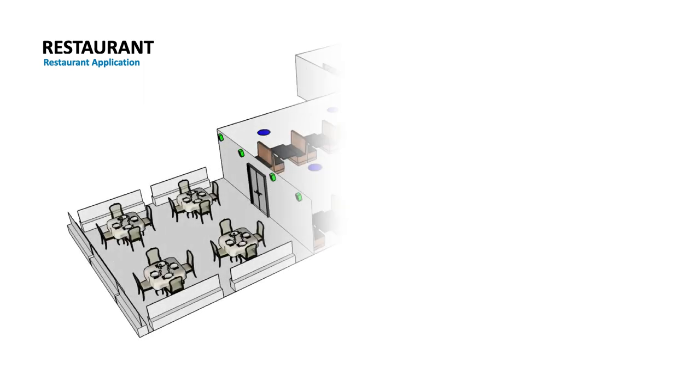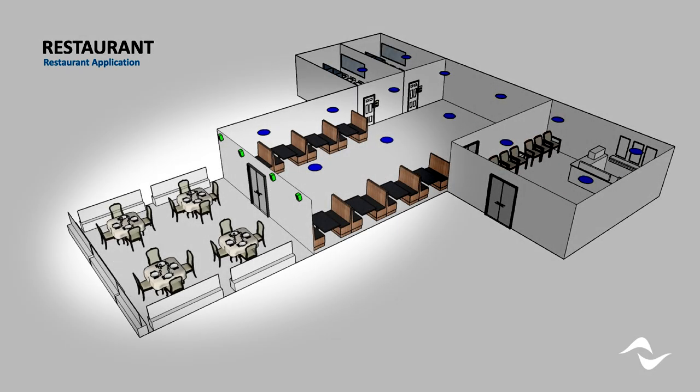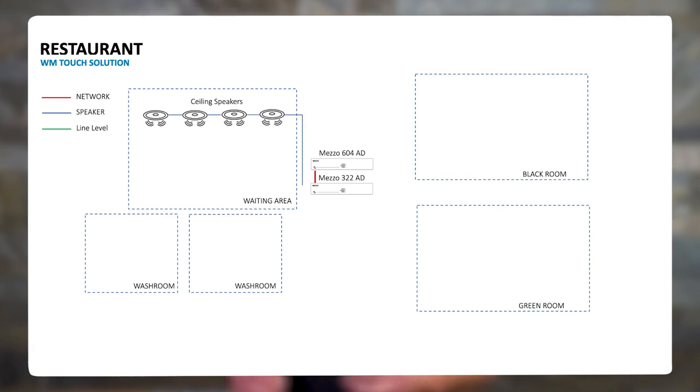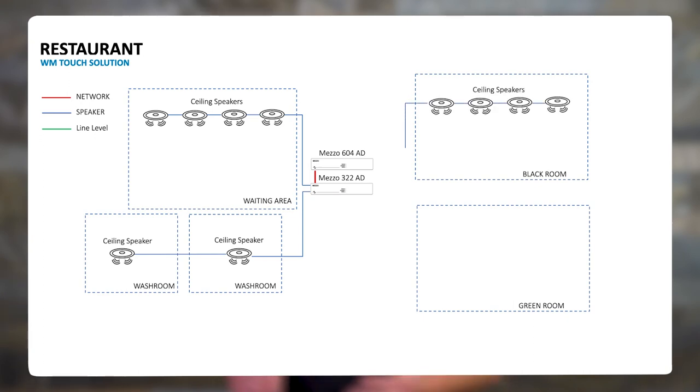Let's have a look at a restaurant example to get a clear picture of dynamic music distribution system applications. A system with the WM Touch and the Mezzo will make it simple to share sources between zones independently from the source location and carry control signals in an automated fashion — all without the need of a centralized DSP. We can recognize different zones in the restaurant layout, like the main dining areas and auxiliary areas like the waiting area and the lavatories. We will connect the various loudspeakers and parts of the system to the amplifiers — in this case two Mezzo amplifiers with analog and Dante inputs.